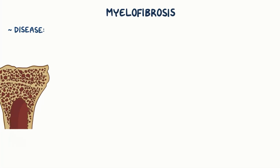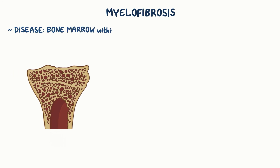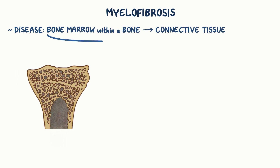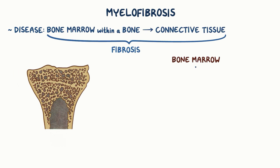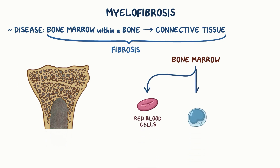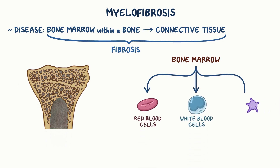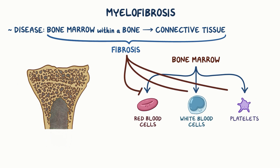Myelofibrosis is a disease in which the bone marrow gets replaced by connective tissue in a process called fibrosis. Since the bone marrow's main role is to produce erythrocytes or red blood cells, leukocytes or white blood cells, and thrombocytes or platelets, the process of fibrosis interferes with production of these cell types.